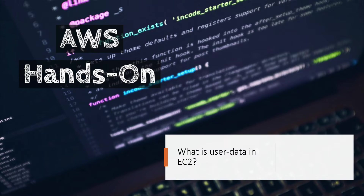The first question is from EC2, and this is one of my favorites: what is user data in EC2? User data is basically used to bootstrap your EC2 instance while it's coming up. If you want a package installed — for example, httpd — you put it in the user data and when your instance comes up, httpd is already installed. You can also provide a custom script to run while configuring your EC2 instance.